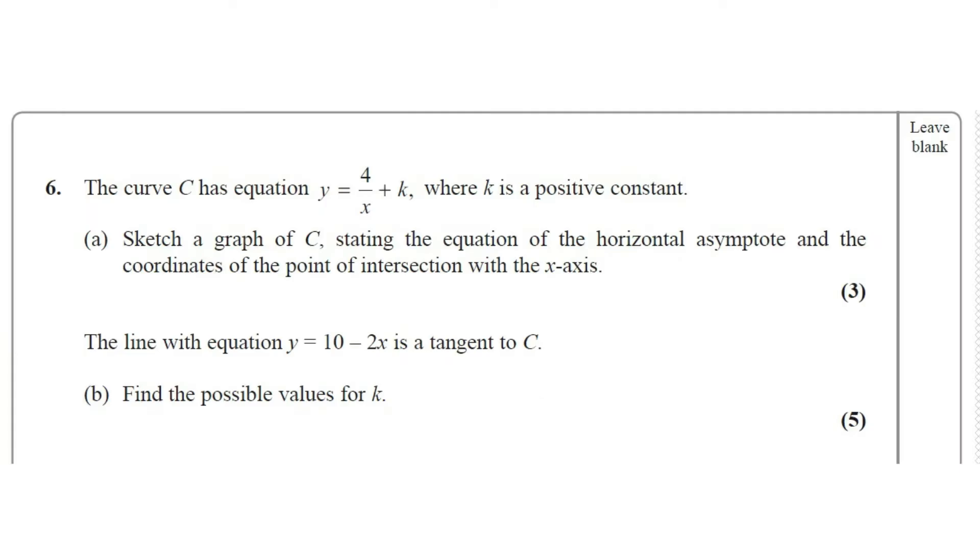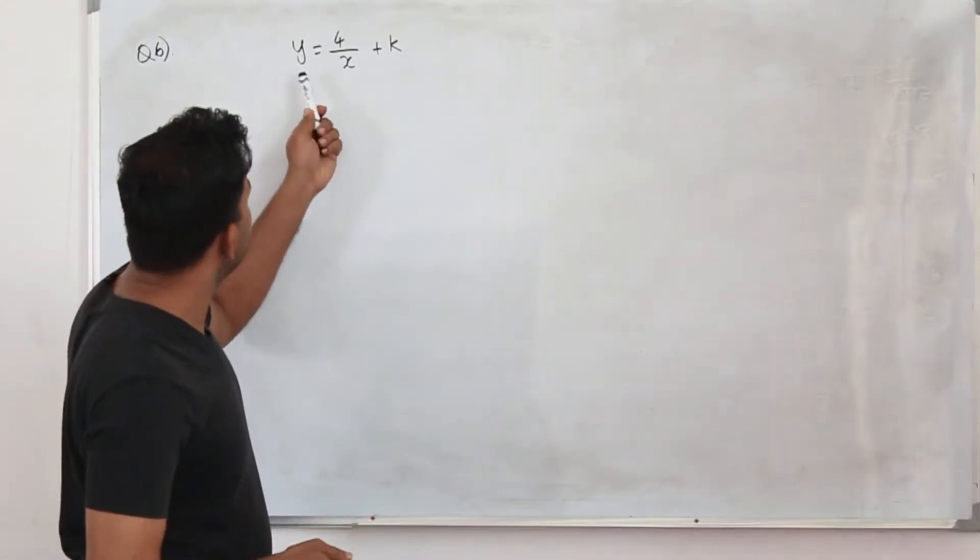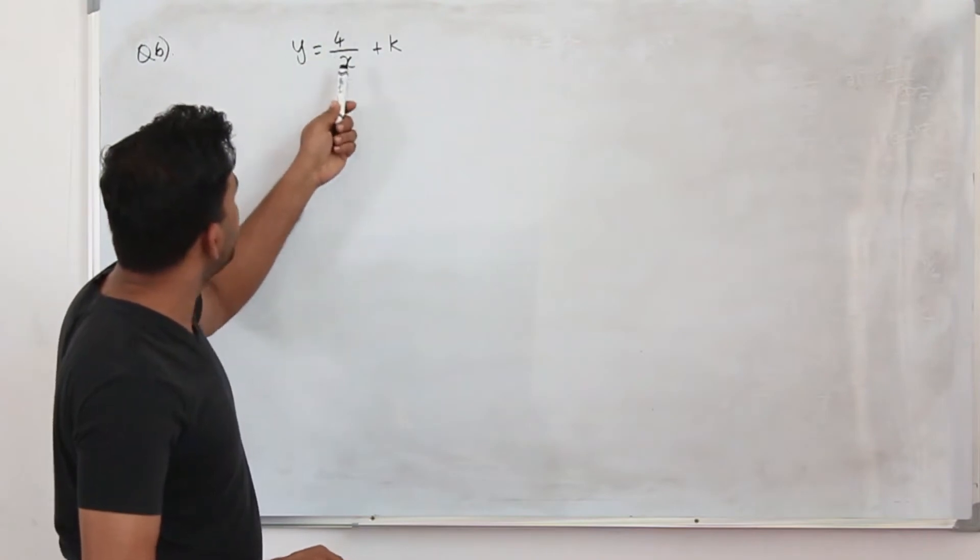Question number 6. The curve C has the equation y equals 4 upon x plus k where k is a positive constant. Sketch a graph of C stating the equation of horizontal asymptote and the coordinates of the point of intersection with the x-axis.